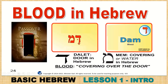The word 'blood' in Hebrew is Dam — D-A-M. You read down and up — Dam is the word for blood. Dalet is the letter for door; Mem is the covering or water. The blood covering the door — the Passover — Dam.